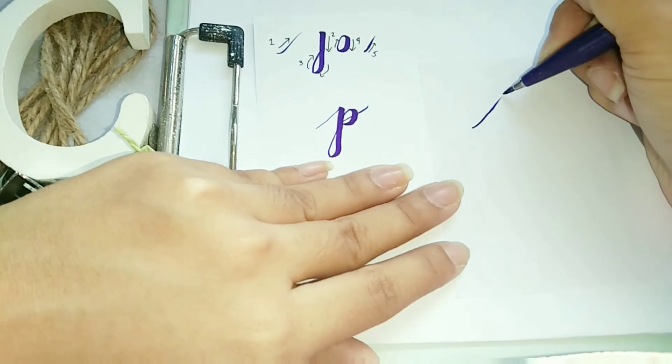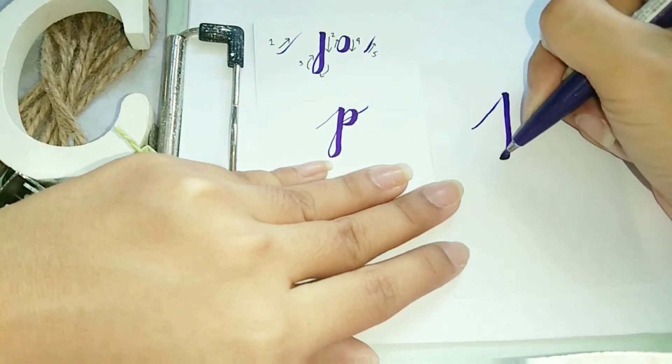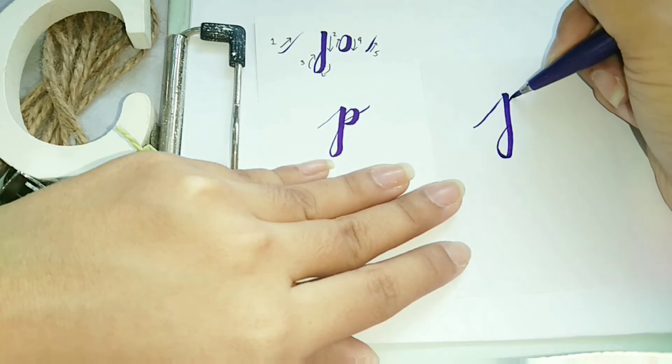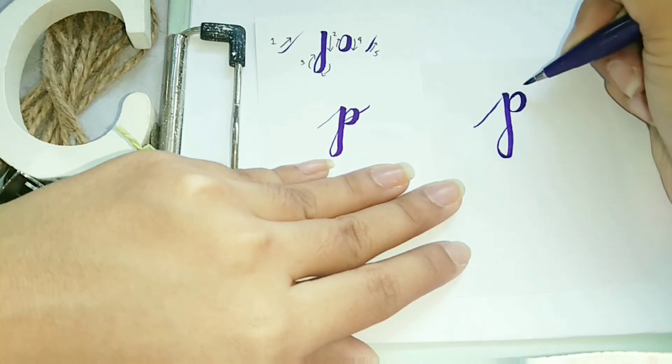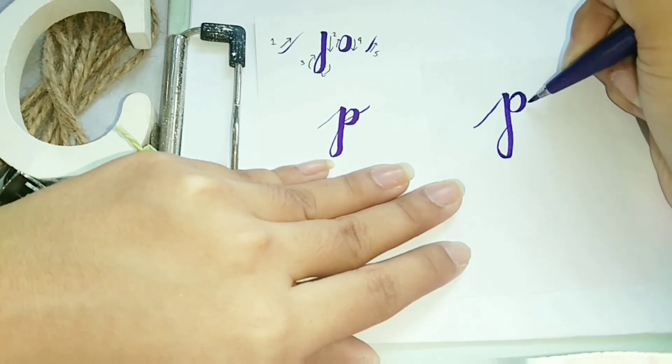So letter P, entrance stroke, tapos descending loop, tapos reverse oval, then entrance stroke lang ulit.